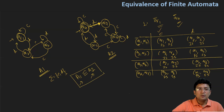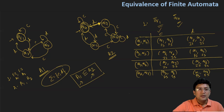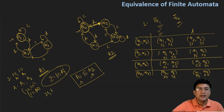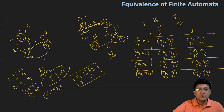When computing the equivalence of two automata, the two rules we follow are: first, if the initial state is the final state in the first automata, then the initial state should also be the final state in the second automata. Second, we start our computation from the initial states of both automata and see the transitions with every input symbol. If the generated pairs are both intermediate states or both final states, there is no discrepancy. But if one is intermediate and the other is final, the automata are not equivalent. We will follow these rules for more questions in the next lecture. Thanks for watching.